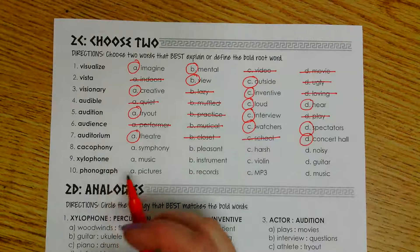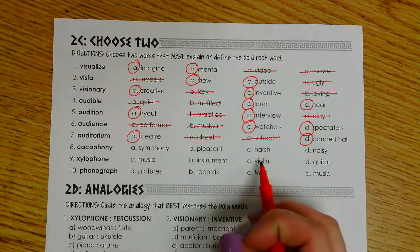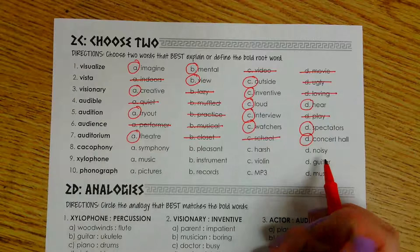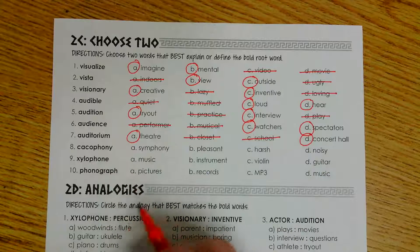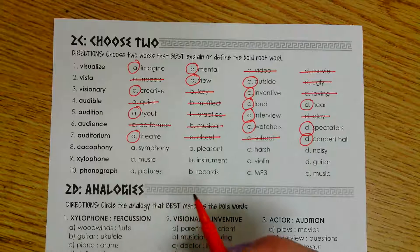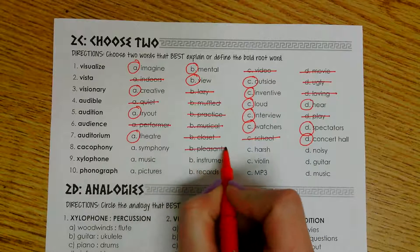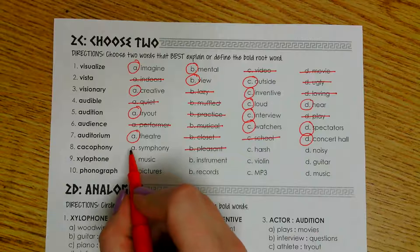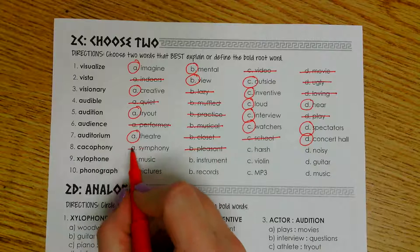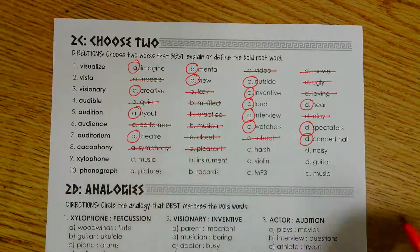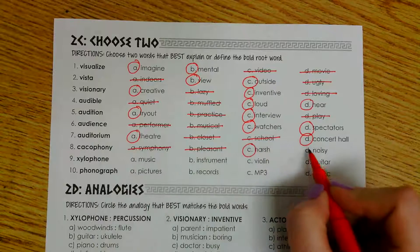Number eight is cacophony. We have symphony, pleasant, harsh, and noisy. With this word, I know that it's talking about a lot of noise that's loud. It's not very pleasant. It's not anything you want to be around. So we're going to mark out pleasant. A symphony is going to be a group of instruments making noise that sounds good that people enjoy listening to. So that really doesn't go with our definition either. So I'm going to choose harsh and noisy.